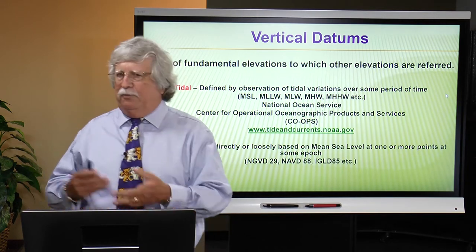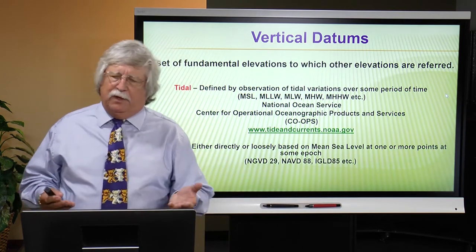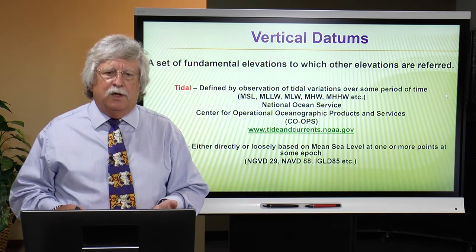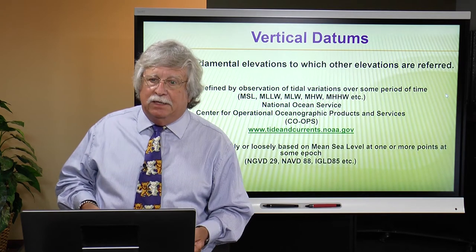If you live in the coastal environment, which a significant portion of the country does, you have tidal datums. These are specific, defined vertical height systems that define various locations of the tide in a specific area. One of the most common ones that people refer to — often erroneously — is mean sea level. We hear this all the time: the height of this point is X number of feet or meters above or below mean sea level.